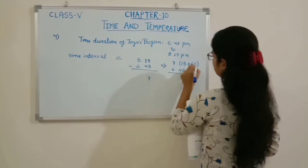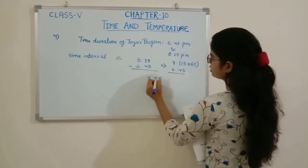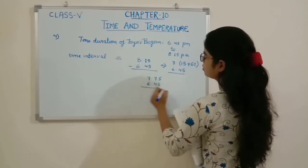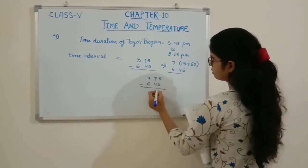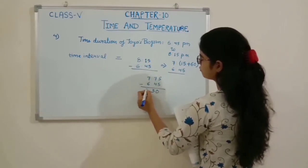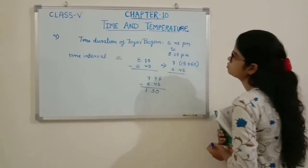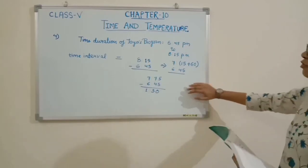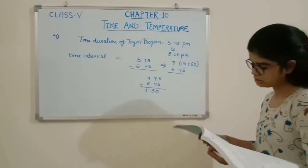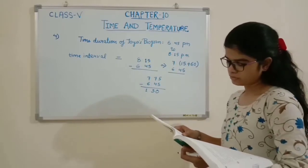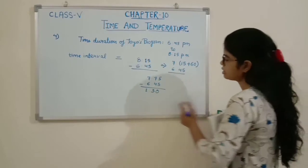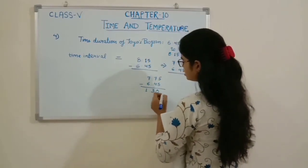So we compute 7:75 minus 6:45: 75 minus 45 is 30, and 7 minus 6 is 1. So the time duration of Jaya's program is 1 hour and 30 minutes. But since 17 minutes were used for advertisements, we subtract 17 minutes from this interval.